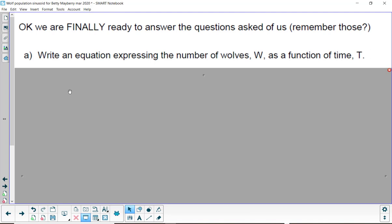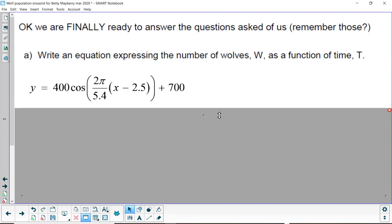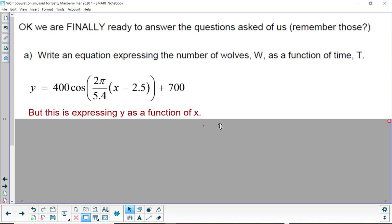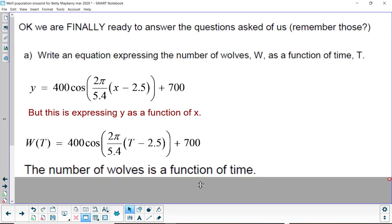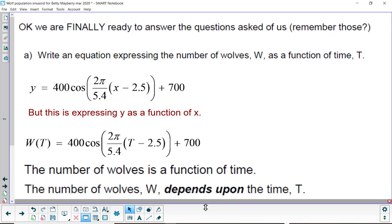We're finally ready to answer the questions asked of us. Part A was write an equation expressing the number of wolves w as a function of time t, which is in years. Remember that our first equation, y in terms of x, is this. But we'd like to write it as w as a function of time. So, that would be written this way. w of t is equal to, and then this. It's the same as this one, except x is now replaced by t, capital T in years. The number of wolves w depends upon the time t. So, w is dependent, t is independent.